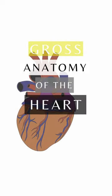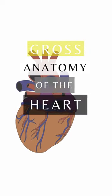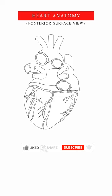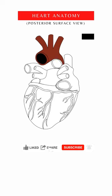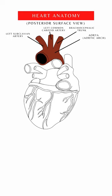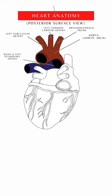Gross anatomy of the heart — posterior surface. Here is a posterior surface view of the heart. Here is the aorta and the aortic arch; its branches are the brachiocephalic, left common carotid, and left subclavian arteries. Here are the left and right pulmonary arteries.